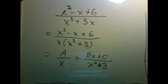So we're going to guess that we can turn it into something like this: a over x plus bx plus c over x squared plus 3.